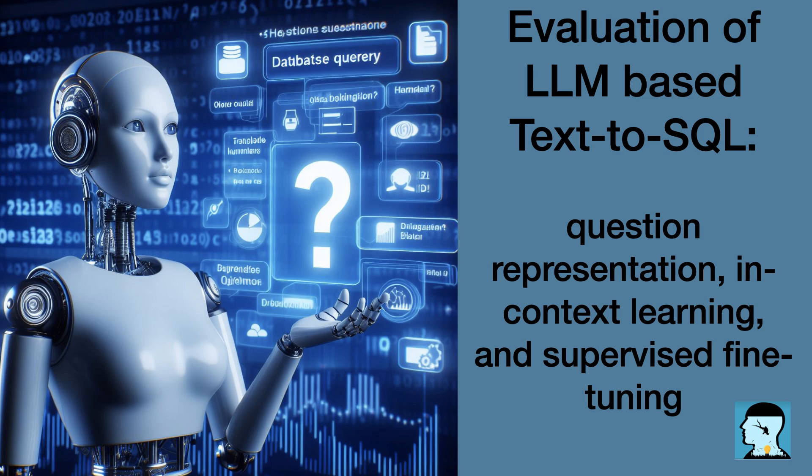Large language models have become popular because they can understand and generate human language very well, like having a very smart robot friend who can understand and answer questions just like a human. In our study, we wanted to see if these LLMs could help in converting text into SQL queries, which are instructions for databases, like telling a robot how to find information in a big library. We were curious to find out if these advanced LLMs could make this process easier and more accurate, like having a super smart assistant helping with complex tasks.